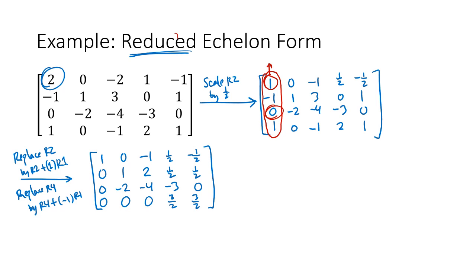At this point, you might be tempted to look at row 4 with its leading zeros and start thinking about pivots in row 4. Don't think ahead — go one column at a time. We're done with column 1, so the next thing we work on is column 2. Don't skip ahead, don't look at the rows — look at the columns.